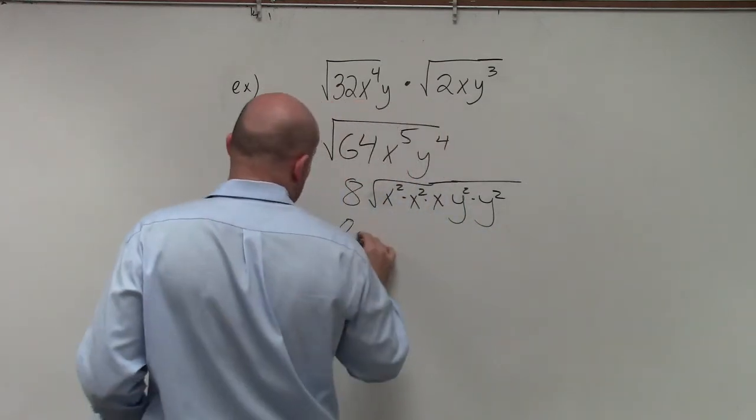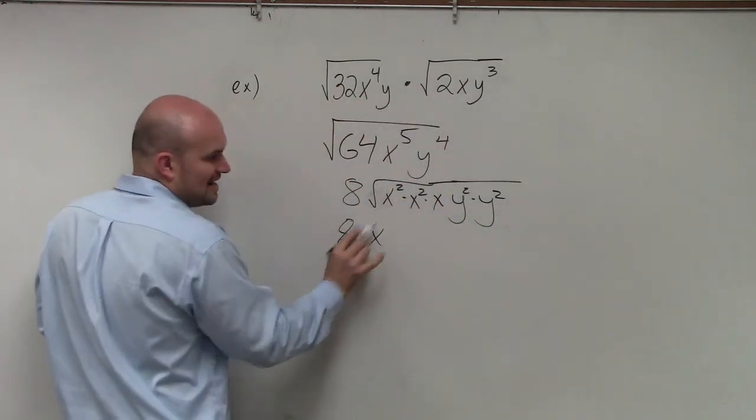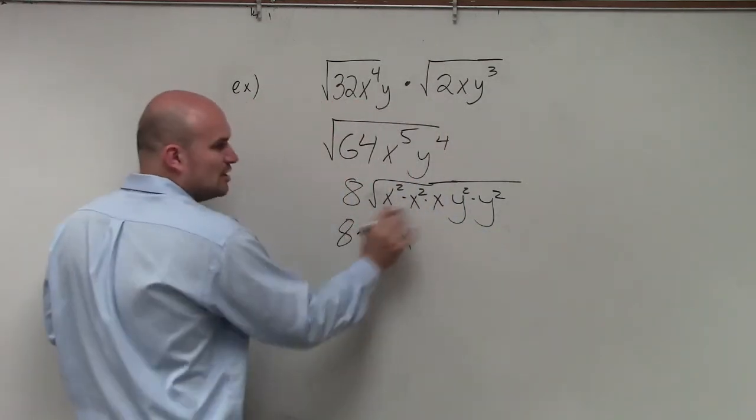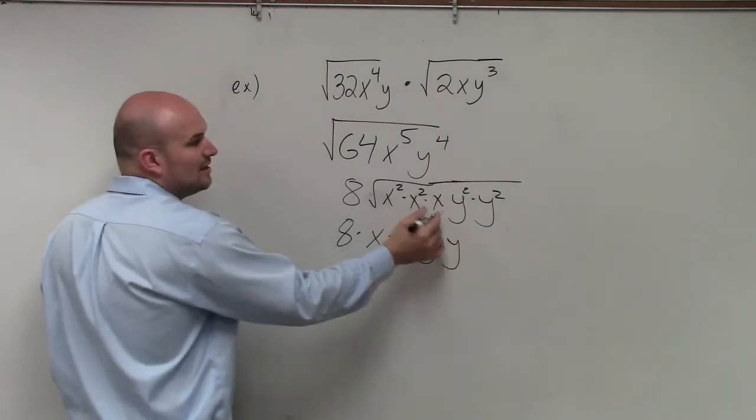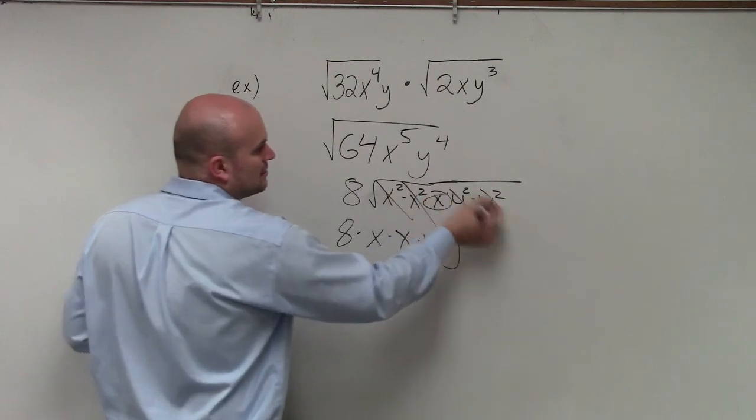So therefore, it's 8 times x. The square root of x squared is x. The square root of x squared is x. The square root of y squared is y. The square root of y squared is y. And then I still have this x under there.